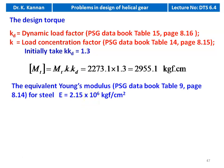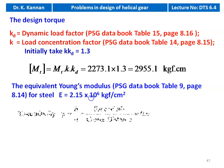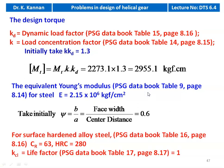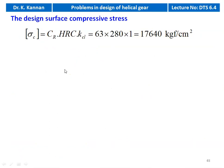We take the equivalent modulus for alloy steel: E = 2.15 × 10^6 kgf/cm² from table number 9, page 8.14. We take psi = 0.6 initially. From table number 16 for surface hardened alloy steel: CR = 63, HR = 280 (Rockwell C hardness), and life factor KCL = 1. Design surface compressive stress sigma_c = CR × HR × KCL = 63 × 280 = 17,640 kgf/cm².